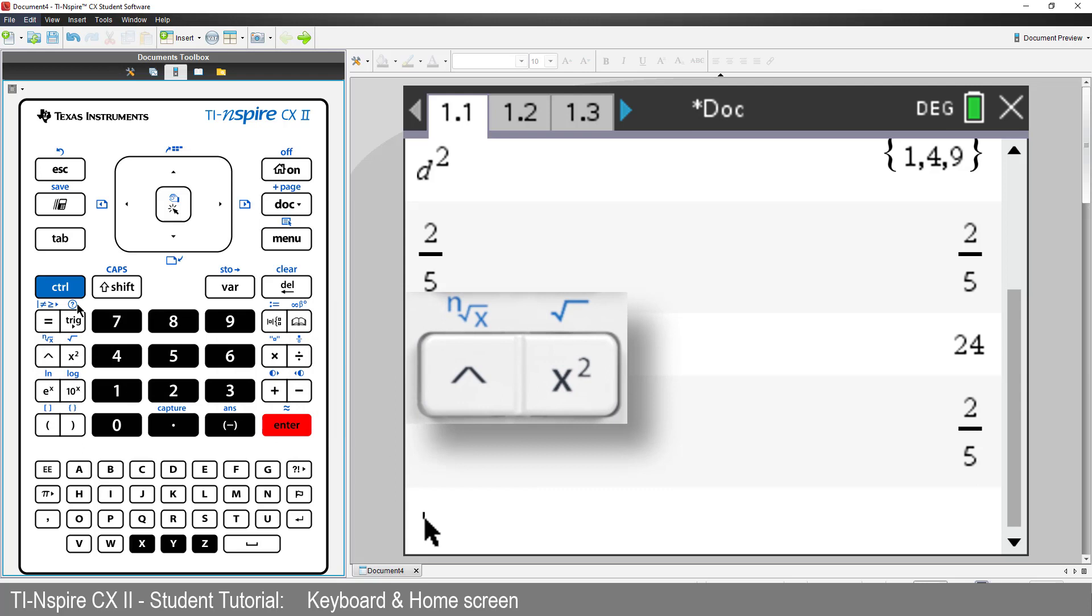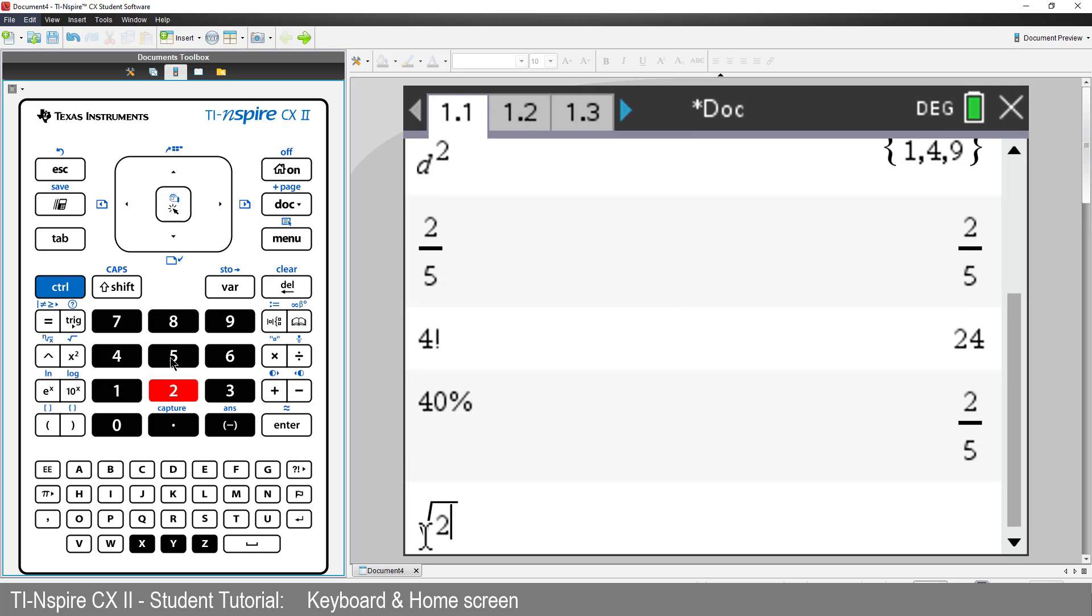You'll also notice that many of the keys have a blue annotation above them. These are like the second function keys on your calculator. You press control followed by the required button. Unlike a computer, you do not need to hold down both keys at the same time. You can do them sequentially.